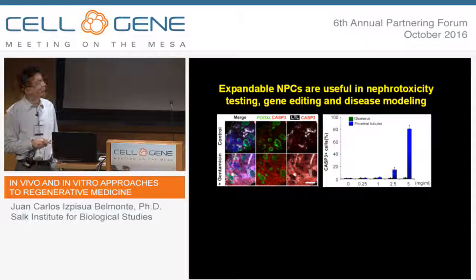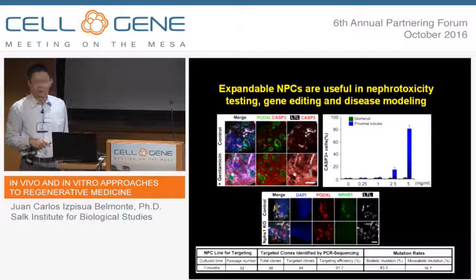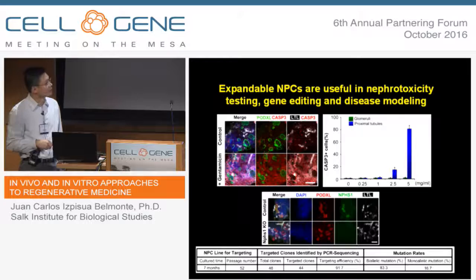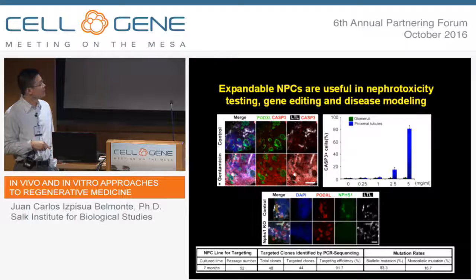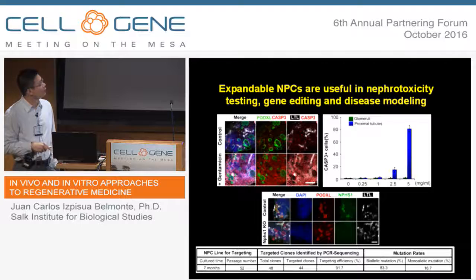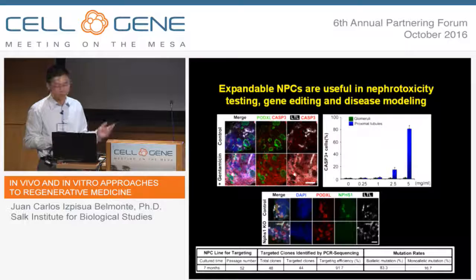The long-term stable expansion of MPCs is also suitable for gene editing and making disease models. As proof of concept, we used the CRISPR-Cas9 system on MPCs to knock out the NPHS1 gene, which is a critical factor in the podocyte. The targeting efficiency was very good at more than 90%, with biallelic indels at more than 80%. When we selected one clone from the gene-targeted clones and differentiated them to nephron organoids, we confirmed that NPHS1 gene was not expressed, indicating successful gene knockout.